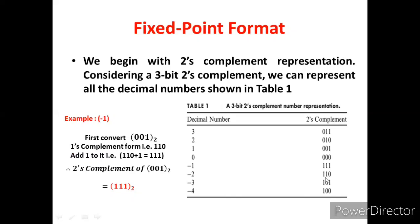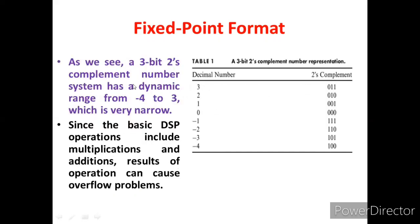Now let us see how this is correct. Let us take the negative number representation since we know the positive numbers are correct. Minus one is represented as 111. Positive one is 001. Convert 001 to one's complement form: that's 110, and add one to get 111. So minus one is triple one. Therefore, the two's complement of 001 is 111. This range varies from minus four to three.